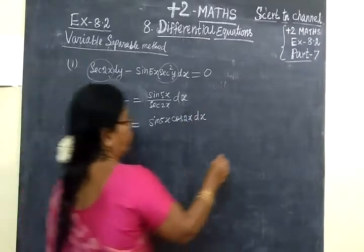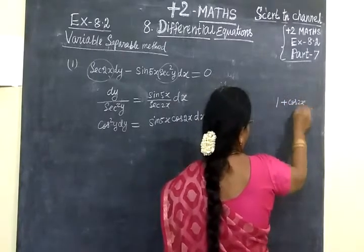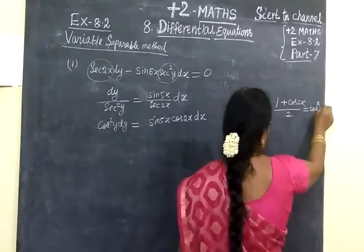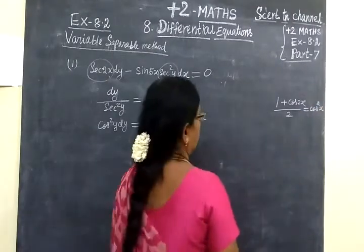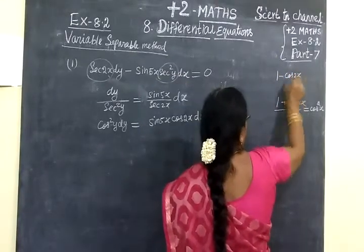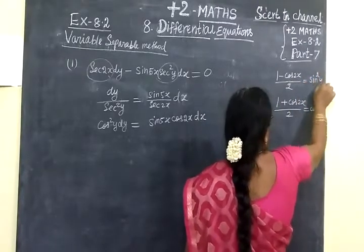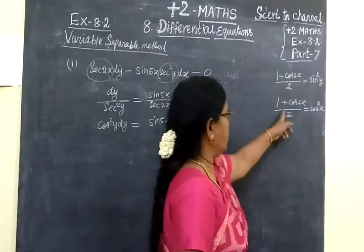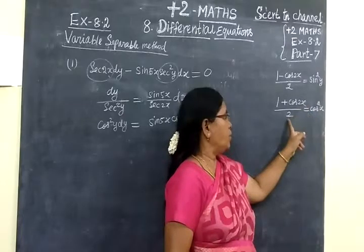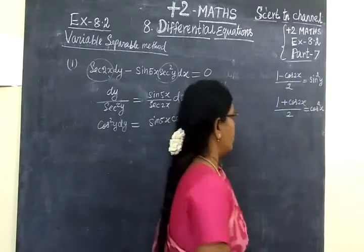Now, we know the form term: 1 plus cos 2x by 2 equal to cos square x. And 1 minus cos 2x by 2 equal to sin square x. The formula. Cos plus, sin minus. So 1 plus cos 2x by 2 equal to cos square x, 1 minus cos 2x by 2 equal to sin square x.